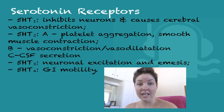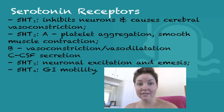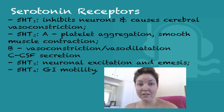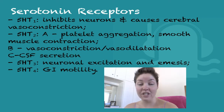5-HT receptor 1 is coupled to the Gi protein, which means it decreases cyclic AMP. This inhibits neurons and causes cerebral vasoconstriction. You can find these receptors in the meningeal vascular beds. 5-HT receptor 2 is coupled to Gq protein, which is IP3 and DAG. They have A, B, and C subgroups. A causes platelet aggregation and smooth muscle contraction. B causes vasoconstriction or vasodilation, depending on where it is in the body.